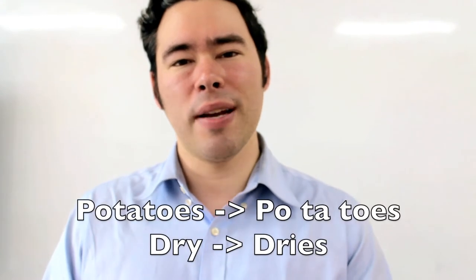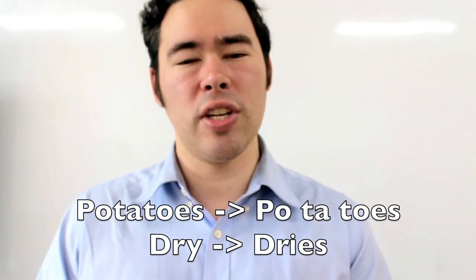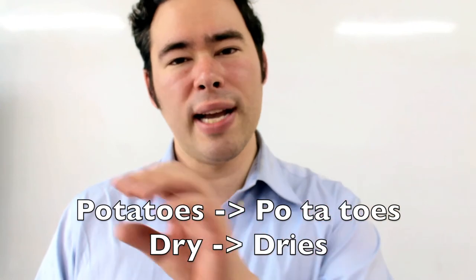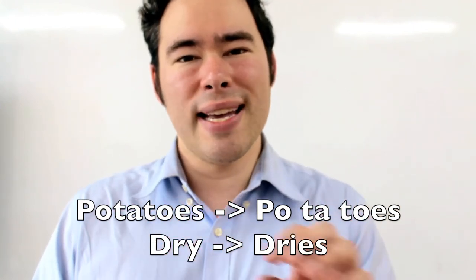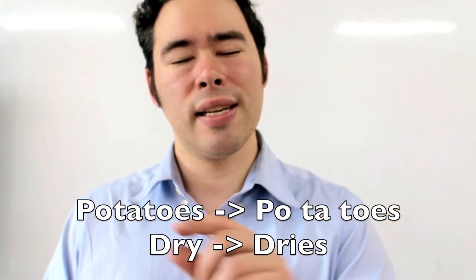Quick note here: some words end with a vowel, like 'potato,' and some end with the part-time vowel Y, like 'dry.' The Y changes to IE, but the sound doesn't change — so 'dry' becomes 'dries,' and 'potato' becomes 'potatoes.' It's 'potatoes' and 'dries,' okay?